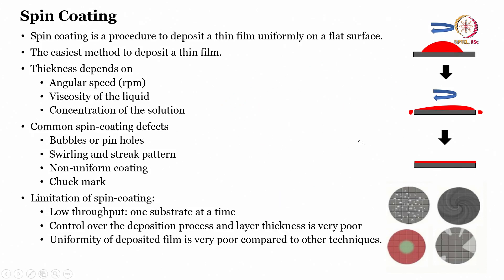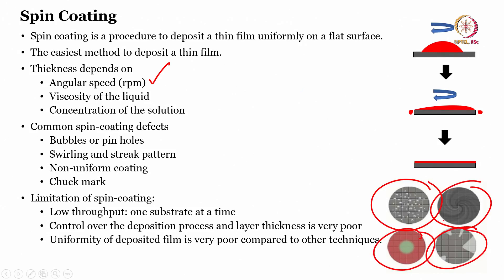The first factor is angular speed (RPM) — higher RPM gives a lower film thickness. Second is viscosity of the liquid — a more viscous solution gives a thicker film. Third is concentration of the solution. Common spin coating defects include: bubbles or pin holes, swirling or stick patterns, non-uniform coating, and chuck marks.